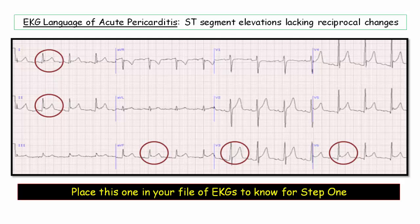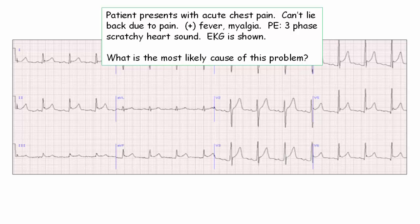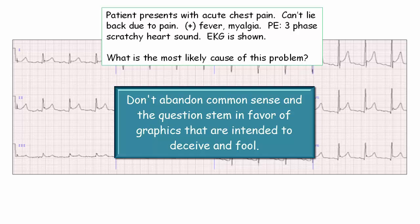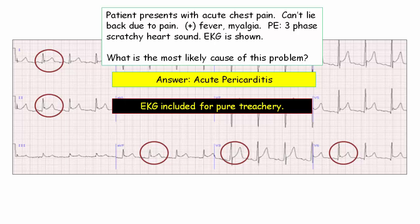So now let's try our luck at a couple of typical scenarios. A patient presents with acute chest pain — they can't lie back due to pain, they have fever and body aches, and physical exam reveals a three-phase scratchy heart sound. An EKG is shown. What is the most likely cause of this problem? This is the classic presentation of acute pericarditis. They will show the EKG to mess you up — every student looks at the tracing and sees ST segment elevation, hears chest pain, and defaults to acute MI. You only get this one right if you understand the concept of reciprocal changes, and of course this patient had positional chest pain and that three-phase scratchy heart sound. When it comes to graphics, students are willing to toss away all their common sense just to misinterpret a deceiving graphic. The graphics are more often included to deceive you rather than assist in the diagnosis. So the answer is acute pericarditis, and the EKG was included for pure treachery.